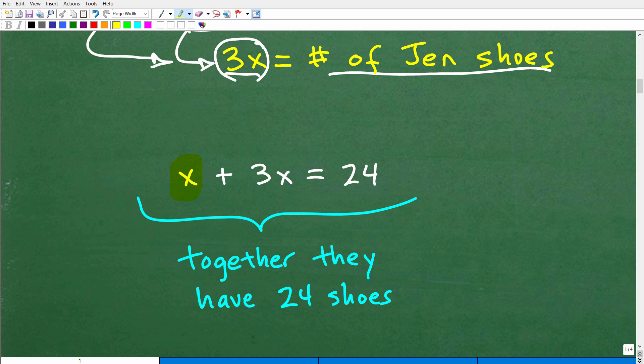So we can set up a nice little equation here. And here it is. X plus 3X is equal to 24. All right, so this is the mother's number of shoes plus Jen's number of shoes, total number of shoes is equal to 24. Together they have 24 shoes. All right, so at this point in the problem, really this comes down to your ability to solve this basic equation. So let's go ahead and do that right now.